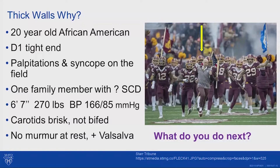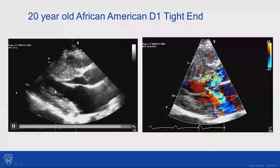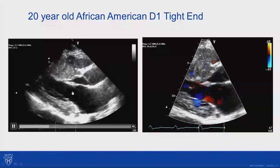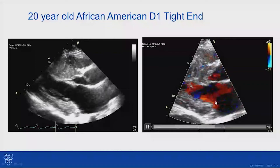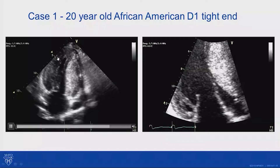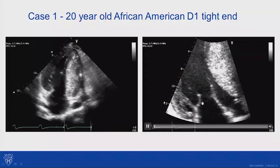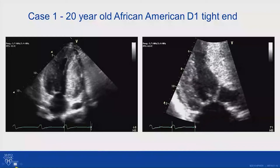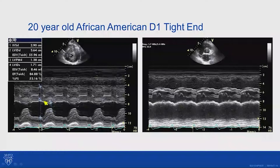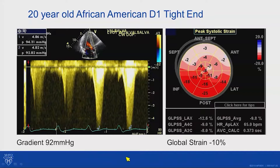His echocardiogram shows clear asymmetric septal hypertrophy with systolic anterior motion. With color Doppler, you can see the turbulence in the left ventricular outflow tract and the posteriorly directed jet of mitral regurgitation. He's hypertrophied in many walls but with asymmetric septal hypertrophy. His left atrium is not significantly enlarged. His walls are quite thick — almost three centimeters. You can see the fluttering of the right cusp and mid-to-late premature closure of the aortic valve. With Valsalva he gets a gradient of 92 mmHg, and he has significantly reduced strain on the bullseye pattern.